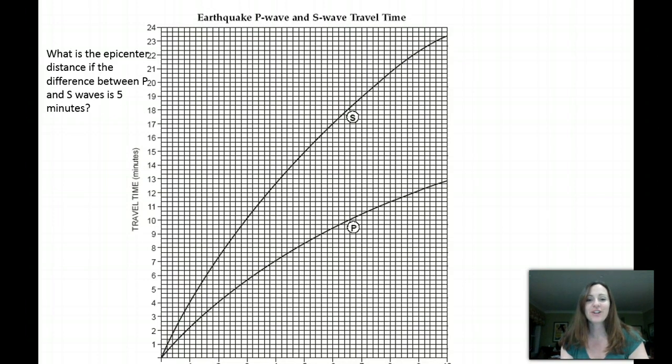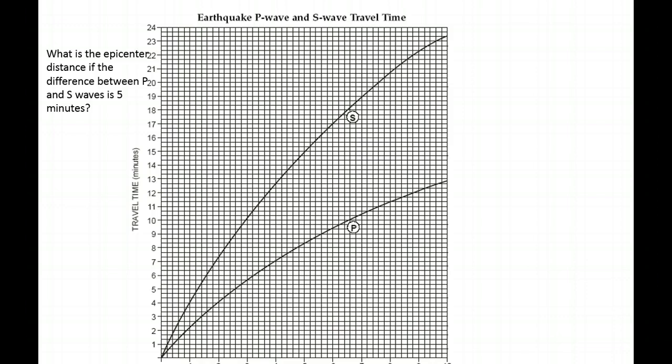Okay. Moving on. Now we're going to look at a different type of question that you may encounter when we're working with earthquakes. What is the epicenter distance if the difference between the P and S waves is 5 minutes? Okay, so that's a little more complicated because it's giving us a difference between the two waves, but that actually will not be a problem. What is the epicenter distance if the difference between P and S waves is 5 minutes?